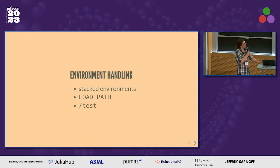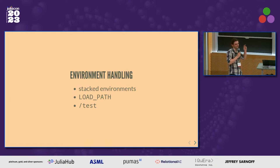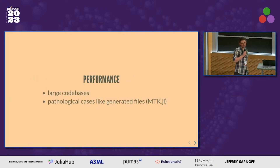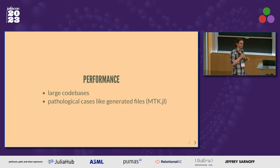Environment handling is also a bit of a pain point. In particular, we are not handling stacked environments correctly. Some people have expressed interest in us handling load path, which allows you to sideload packages outside of your environment. And for testing enthusiasts, the test directory currently doesn't get any IntelliSense — we've disabled it because it mostly doesn't work in the current implementation, which is really annoying. Performance is sort of adequate if you have small code bases, but for large code bases it gets pretty bad. There are even pathological cases, like generated Julia files, where the language server basically shuts down and you get updates on the order of 20 seconds, which is pretty bad if you want that update loop for every keystroke.